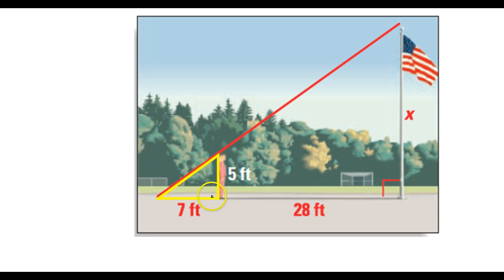Many students will go 7 over 28 is equal to 5 over X, but that would be wrong. 5 and X are both whole sides of the triangle, so that's fine. We will do 5 over X. But 7 and 28 are not both whole sides of a triangle. 7 is the entire side of the yellow triangle, but 28 is just the leftover part.